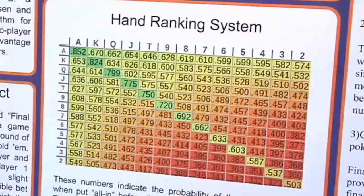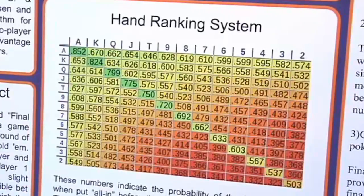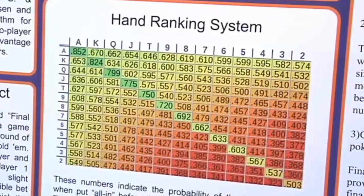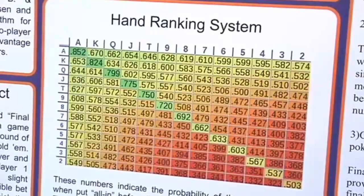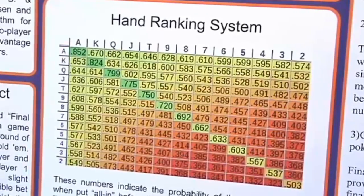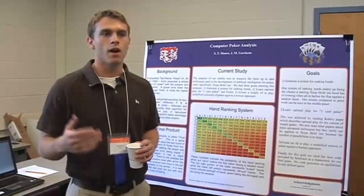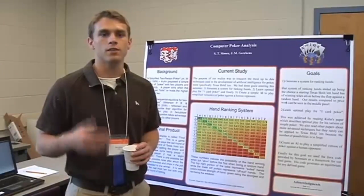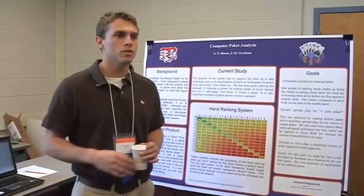It turns out Texas Hold'em is really hard to analyze mathematically. So basically what we did was we broke it down into a much simpler game. And the end result is basically you playing one hand against a computer, and it's just the final round of betting.